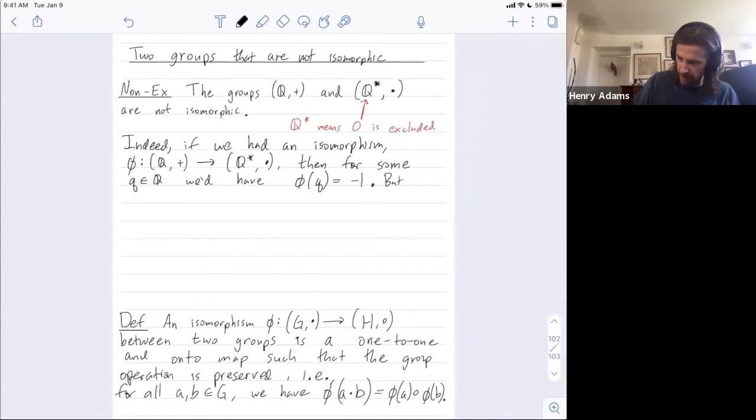But then what we're going to do is we're going to apply this isomorphism property that we'll have to have. So one way you could write q in this additive group is q is just a rational number. So q is equal to q over 2 plus q over 2.